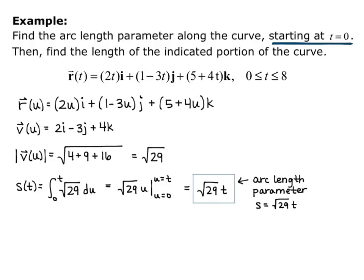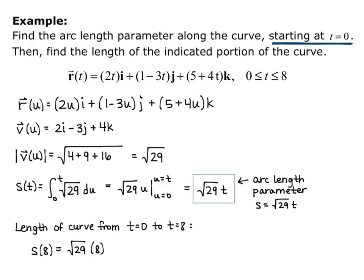Now we want to find the length of the indicated portion of the curve, from t = 0 to t = 8. The length of the curve from t = 0 to t = 8 is s(8) = √29 × 8 = 8√29. So if I started at t = 0 and walked along the curve until time equals 8, I would have traveled 8√29 units.